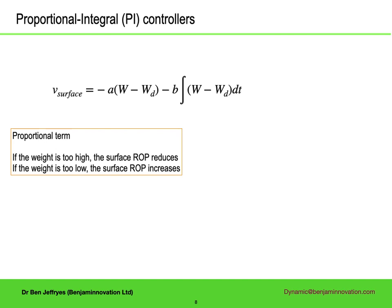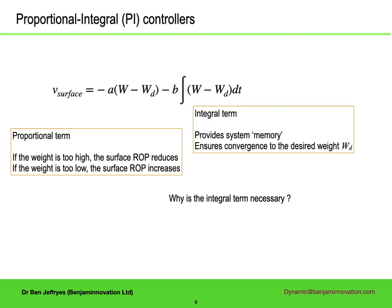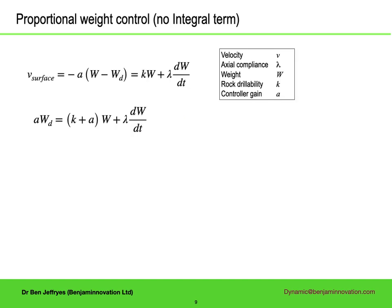The controller has two terms: a proportional term, which changes sign depending on whether the weight is above or below the desired weight, and an integral term, which is constant at the desired weight. Why do we need an integral term? Very loosely speaking, it's a kind of memory term, but more importantly, if it wasn't there, the system would not converge to the right weight. If we just had proportional control with no integral term, there's only one parameter in the controller, the gain a. We can combine the autodriller control equation with the drilling dynamics equation to get a simple differential equation.